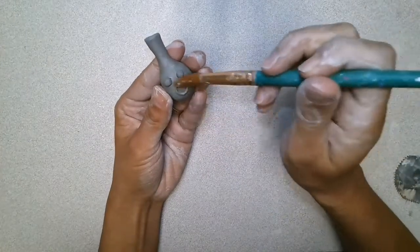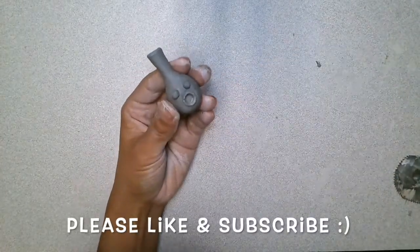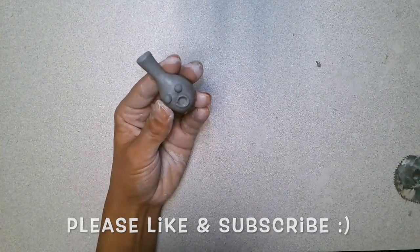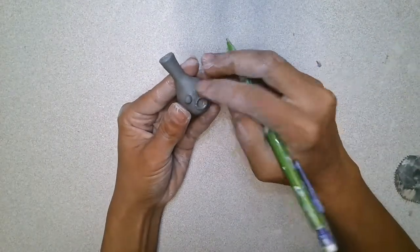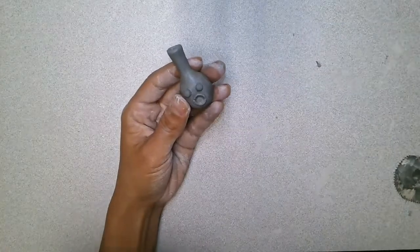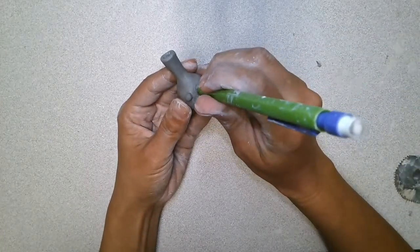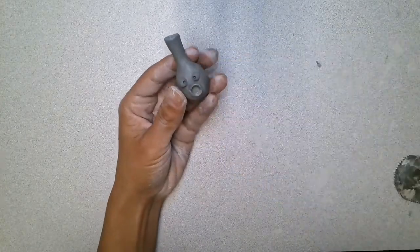With the end of my paintbrush, I'm going to create a little indent and create some lips around the mouth. For this one, I'm just going to use the end of my pencil to create the iris and the pupil.